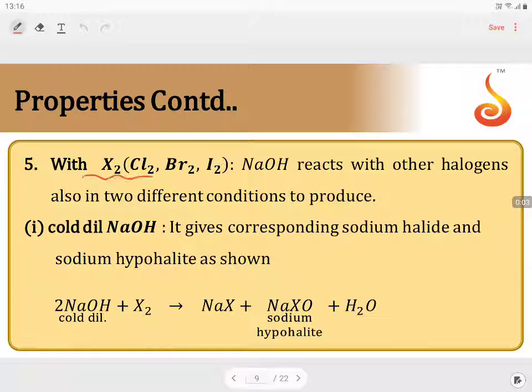Reaction of NaOH with halogens like chlorine, bromine, and iodine. They react with all other halogens other than fluorine under two different conditions to produce two types of different products. Let us see what are the two different types of products.